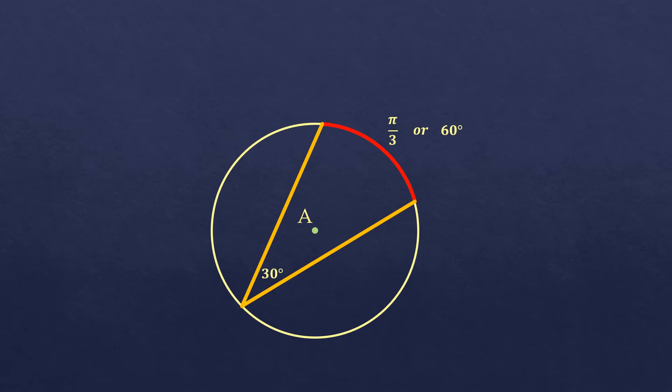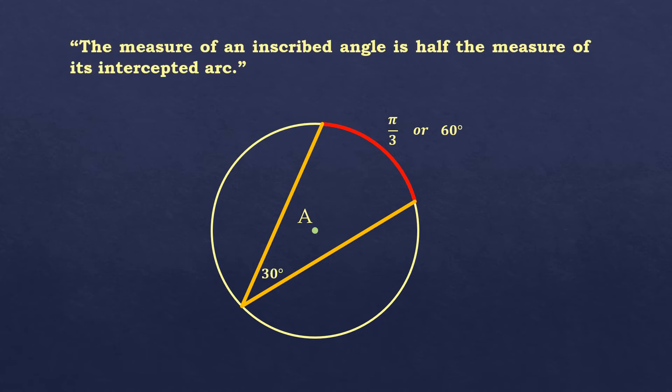Our basis is this theorem: the measure of an inscribed angle is half the measure of its intercepted arc.